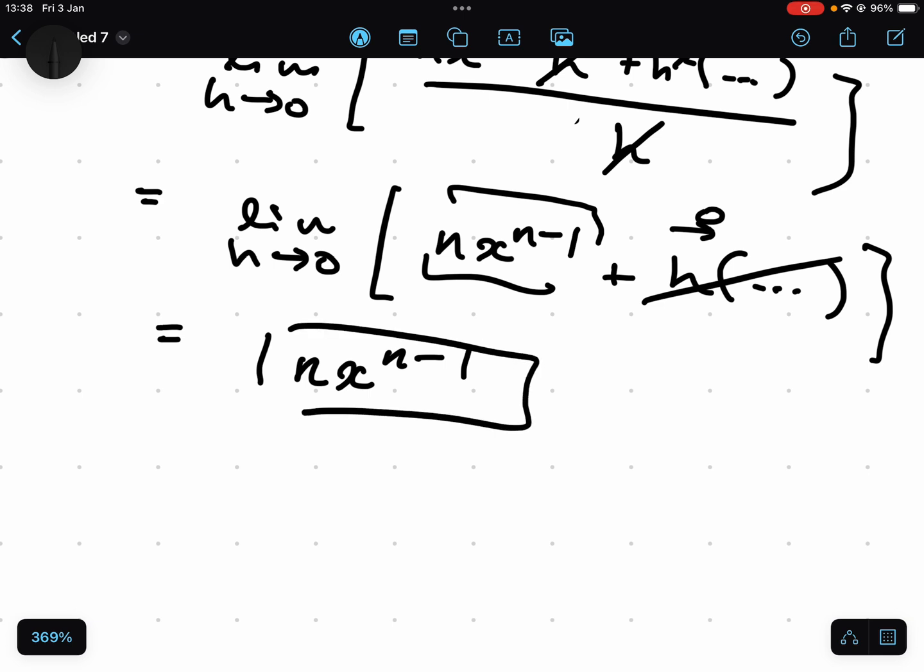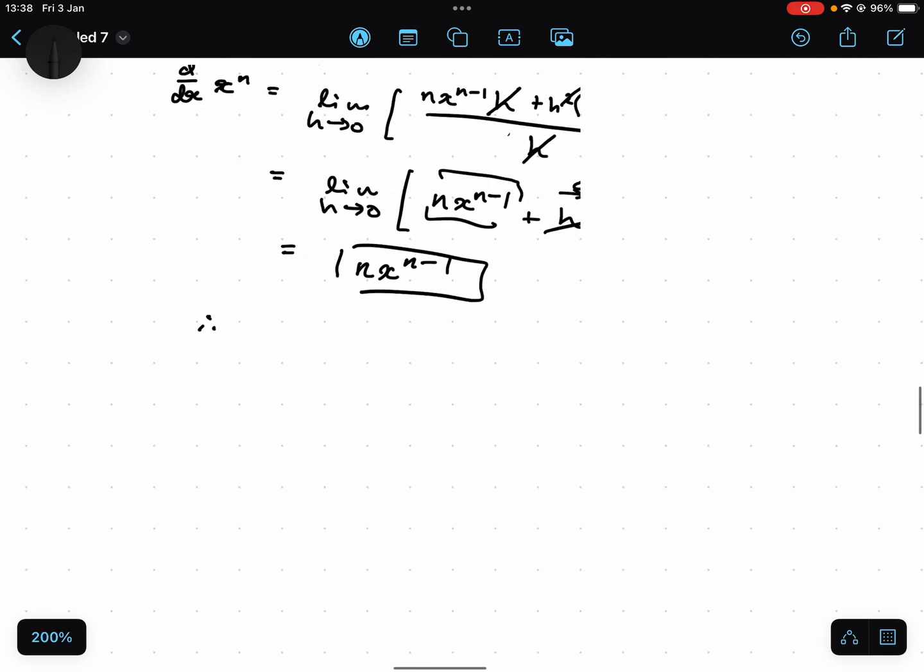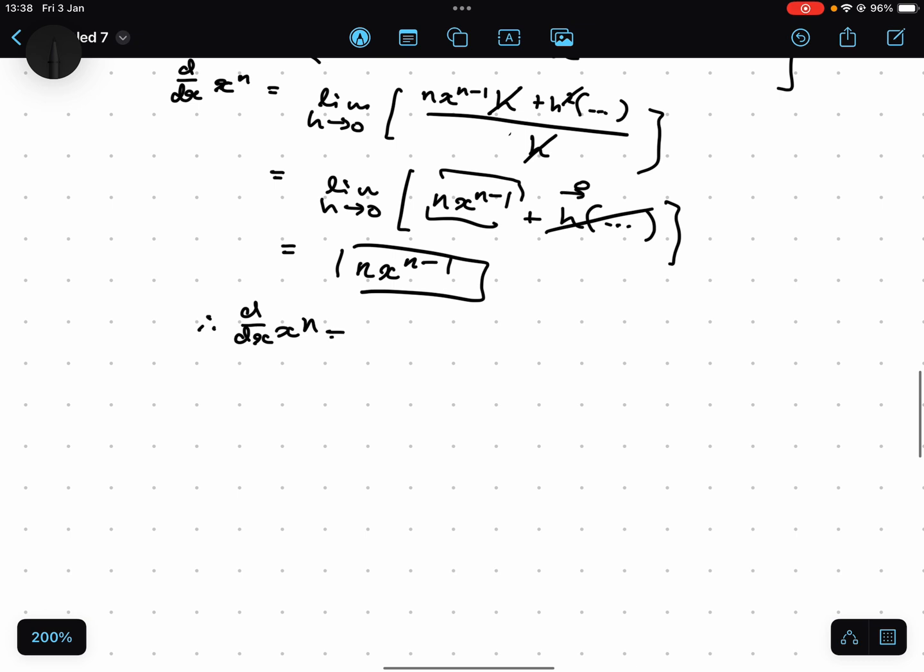All right, therefore, if you want, d/dx of x to the n equals nx to the n minus one. And there you go. Nice and easy.